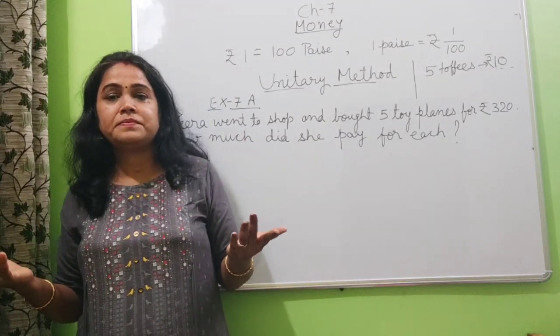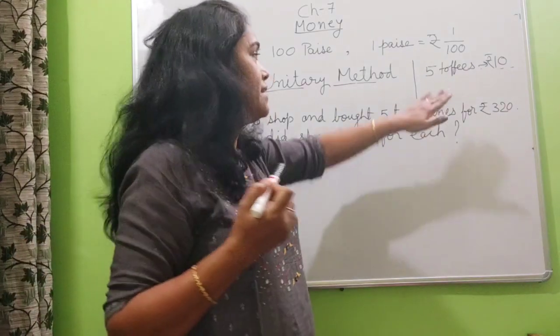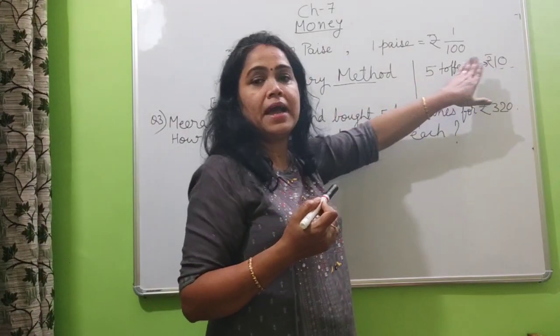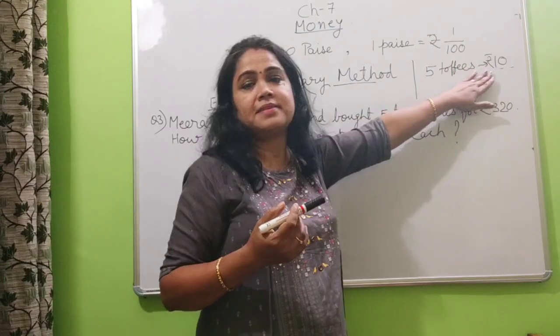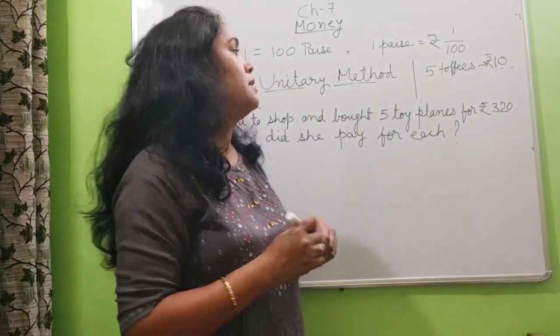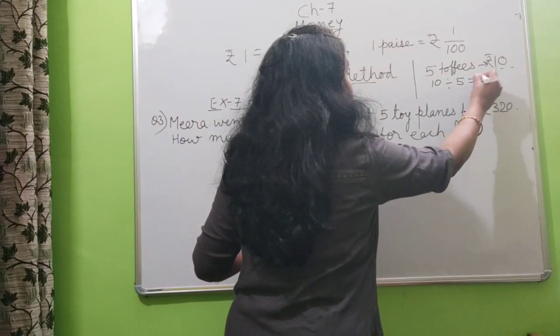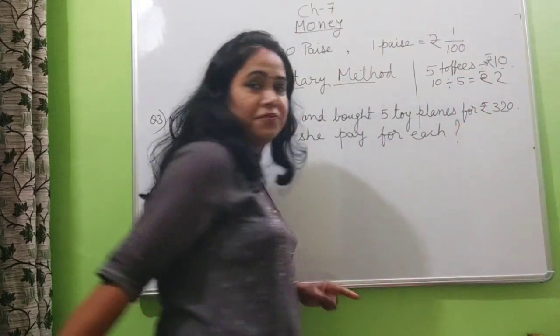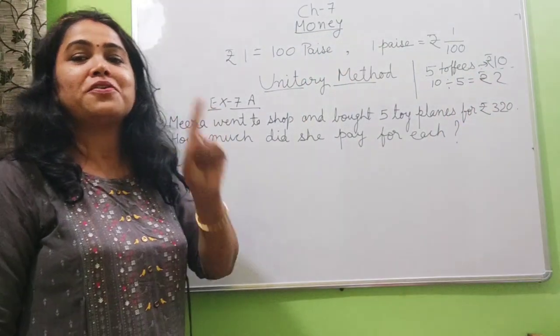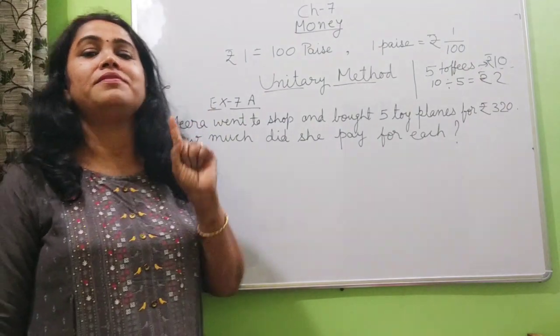What will you do? Cost of 5 toffees is rupees 10. So you will not give 50 rupees for 1 toffee. So you will divide this 10 by 5. So you will give 2 rupees for 1 toffee. What you have done? You have divided.